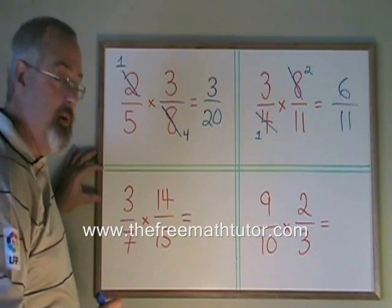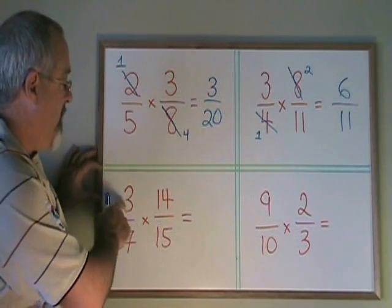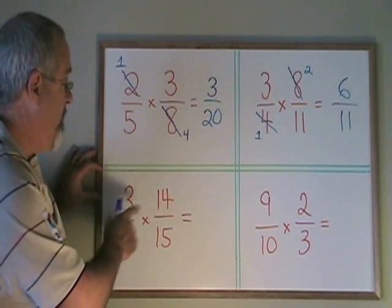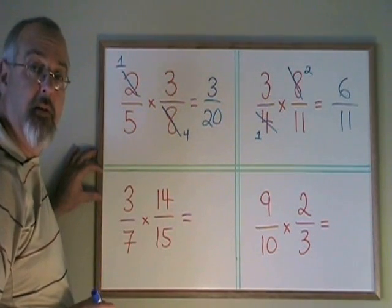Here's one that's a little bit more complicated, because the 3 and the 15 have a common factor of 3, while the 14 and the 7 have a common factor of 7.